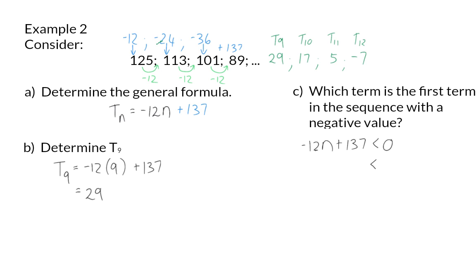And next, if I now divide both sides by 12, I will get a value of 11.42. This means that the 11th term is still positive or bigger than 0, and the 12th term will then be the first term with a negative value.